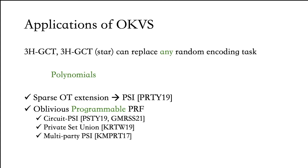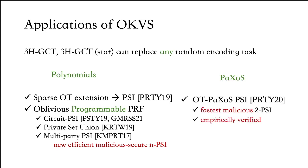While exploring the multi-party PSI protocols in KMPRT17, we realized that one of their constructions which is augmented semi-honest secure is actually efficient against malicious adversaries with a small modification. So we obtained the most efficient malicious-secure multi-party PSI protocol and describe this in our paper, with a qualitative analysis of why this is the most efficient protocol to date. Our OKVS can also replace the role of Paxos: as a flagship example, we consider the OT-based Paxos PSI protocol from PRTY20. By replacing Paxos with our OKVS, we obtain the fastest malicious two-party PSI protocol to date, with the added advantage that this is empirically verified.